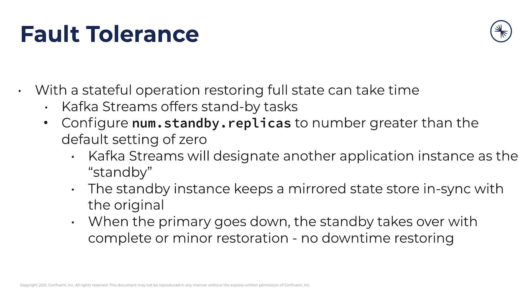With stateful operations, restoring the full amount of state from the beginning of time in the changelog can still take a lot of time, even with compaction. For this, Kafka Streams offers what's called standby tasks. You can configure Kafka Streams to use standby tasks to help speed up the time it takes to get into a running state after restoring from a changelog. You do this by setting the num.standby.replicas config to any number greater than the default of zero. For general fault tolerance and availability, we recommend setting num.standby.replicas to one or greater, depending on how many nodes you have running.